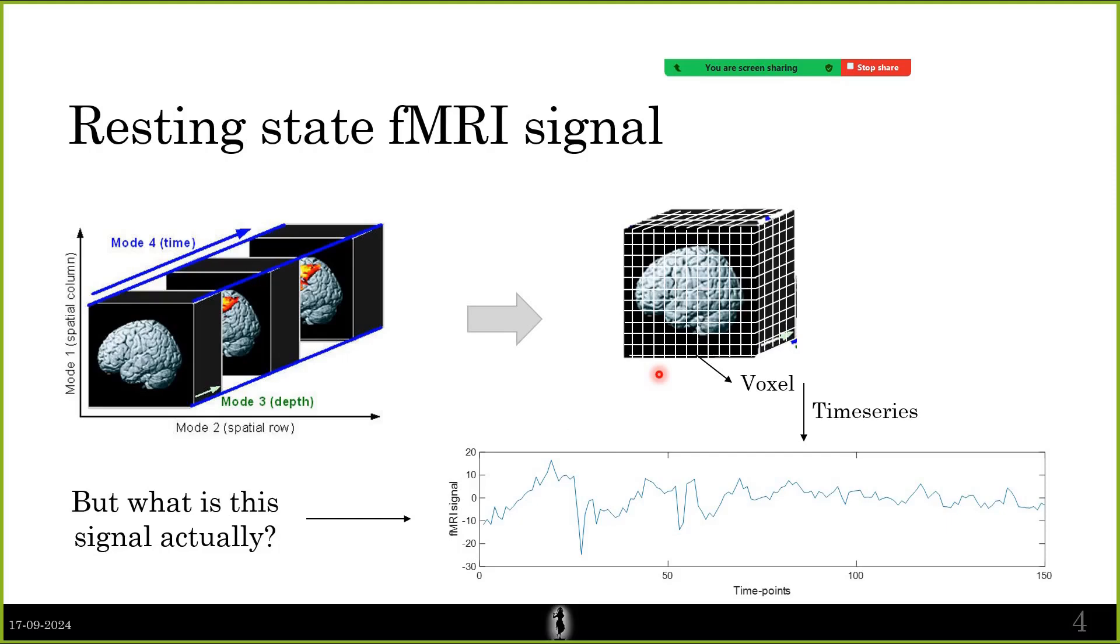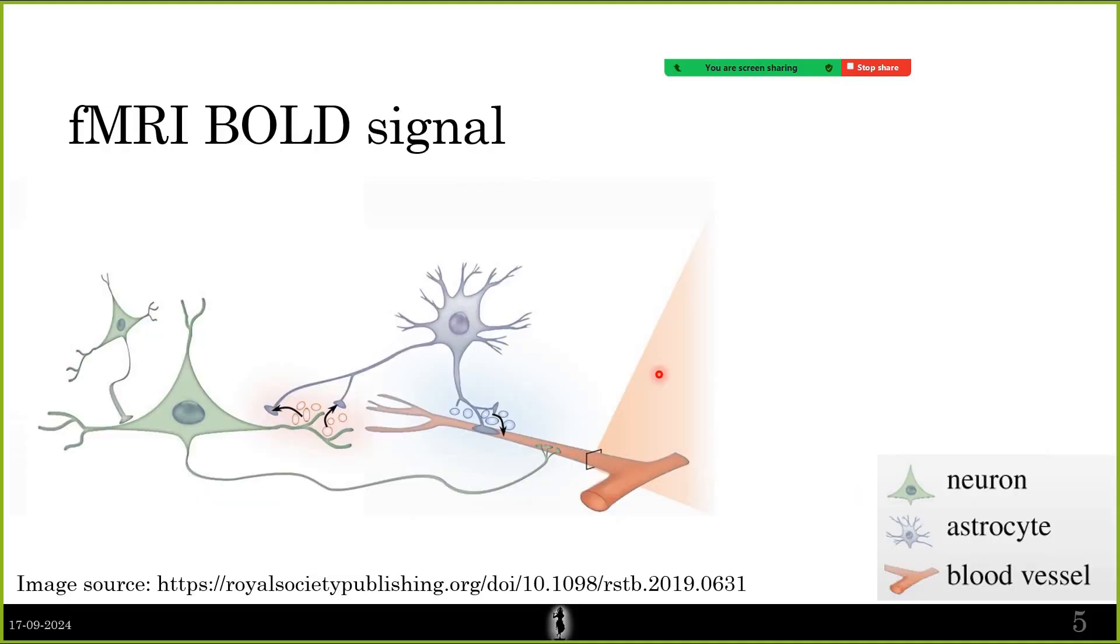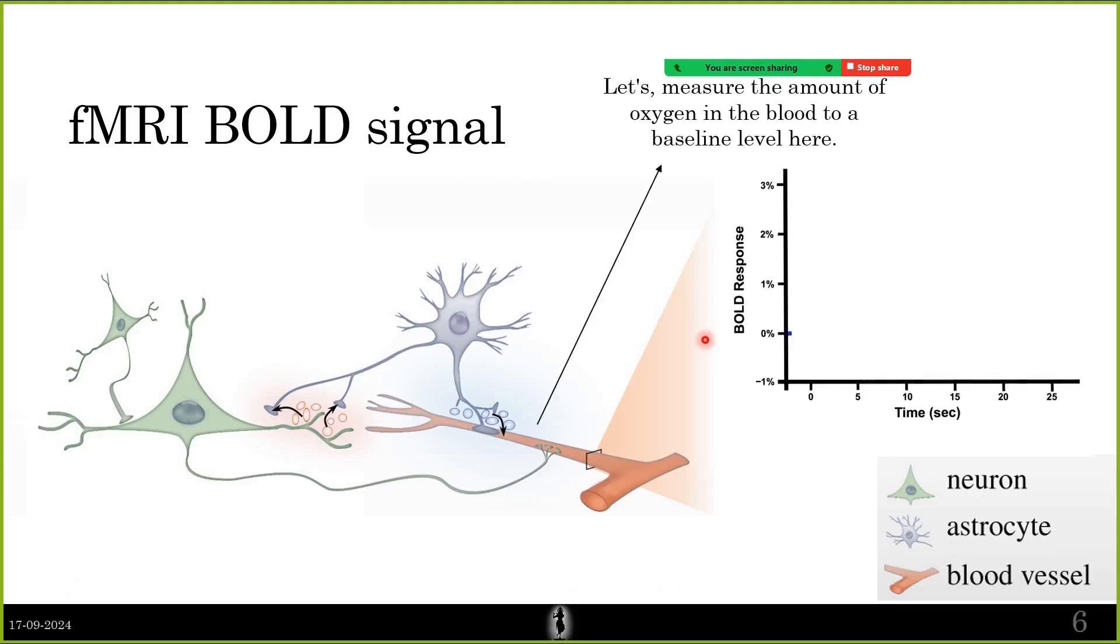What is this signal actually? This is what is called the fMRI BOLD signal. I'll walk you through the basics of what this signal is. Let's say you have the neuron over here, this is your astrocyte, which is a coupling agent between the neuron and the blood vessel. This is your blood vessel.